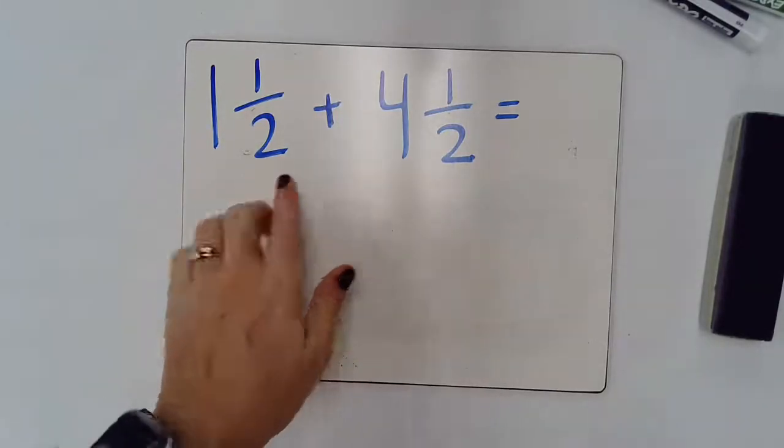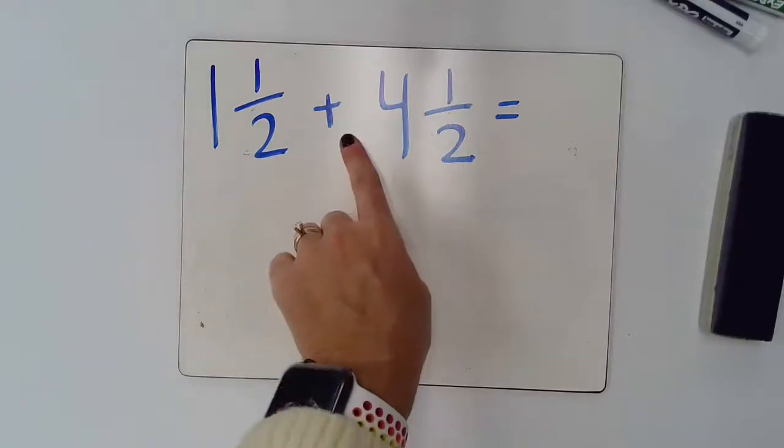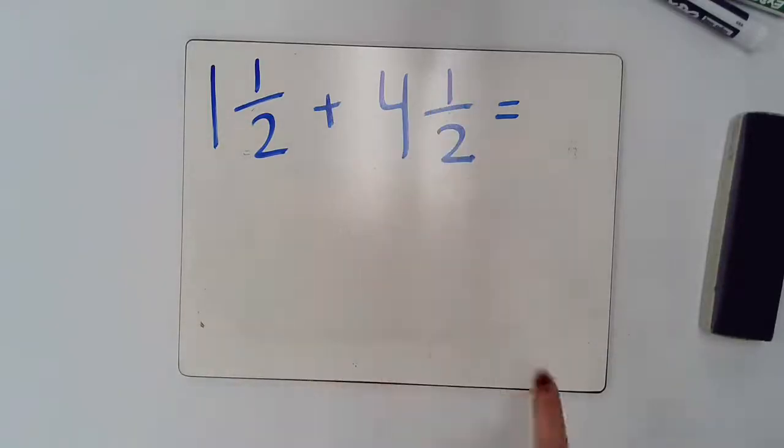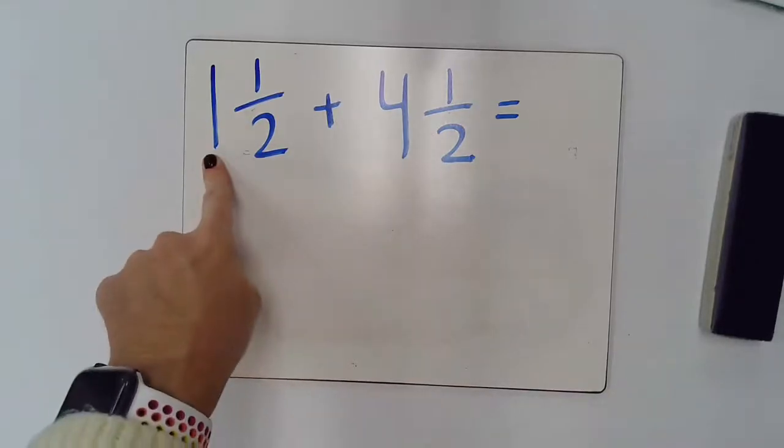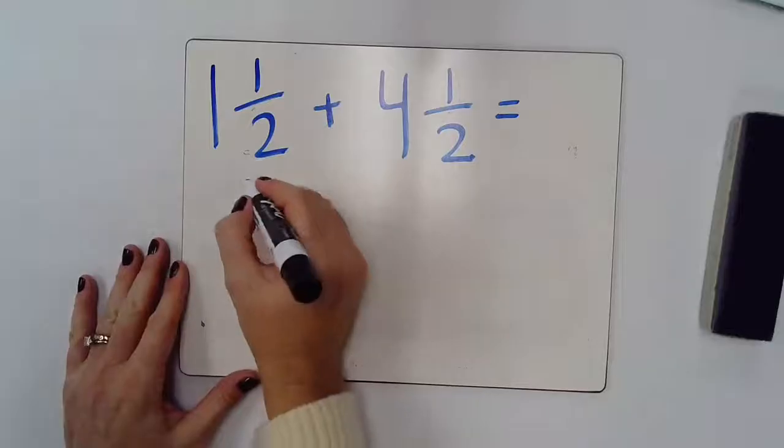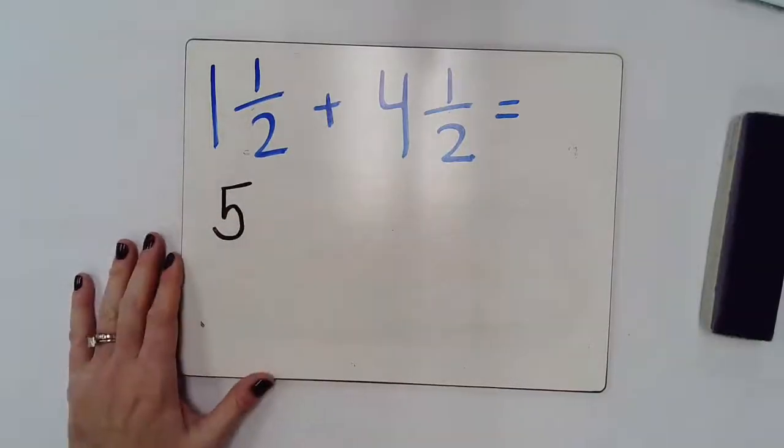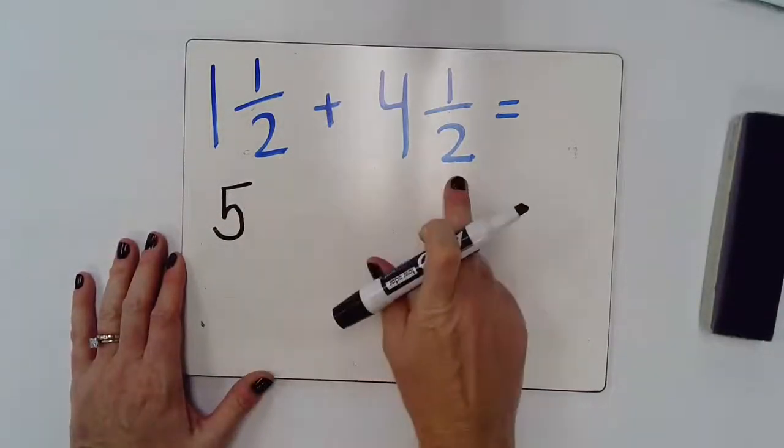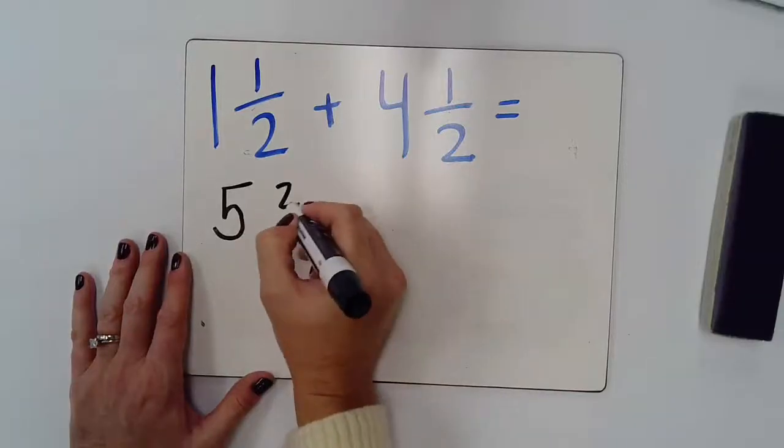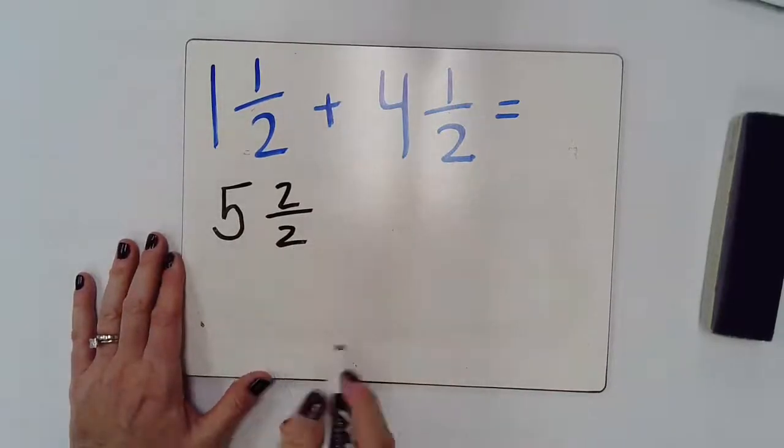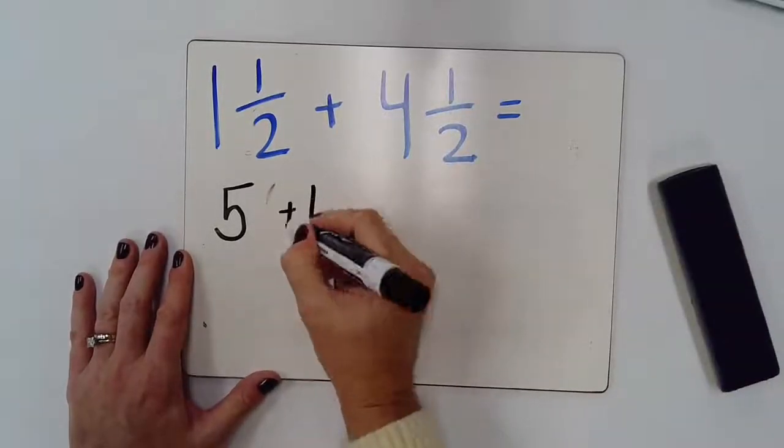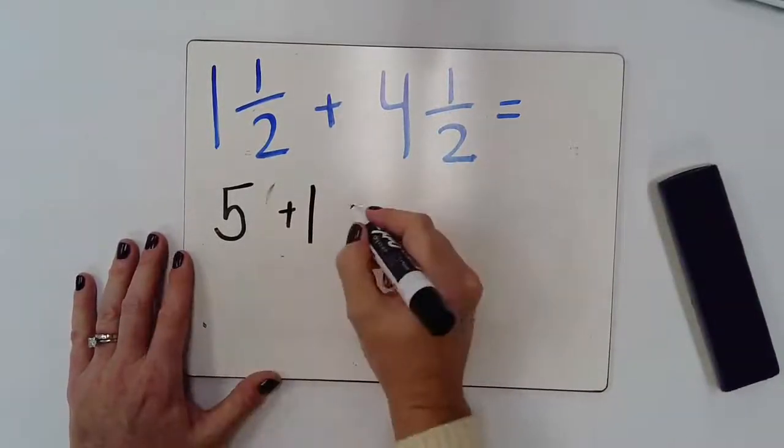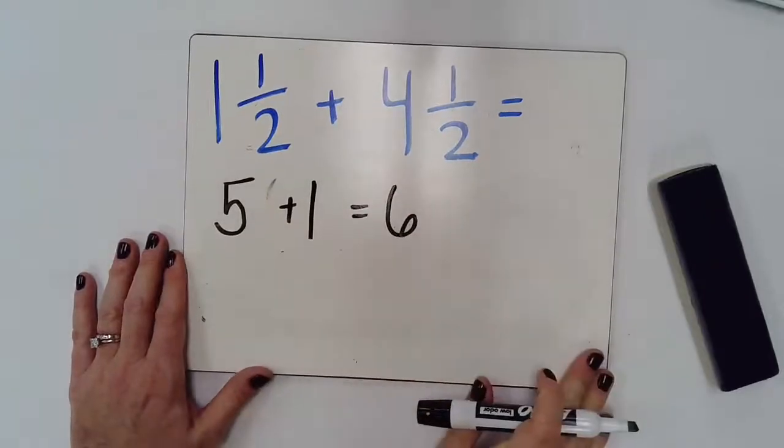So, here's our first problem: 1 and 1 half plus 4 and 1 half. What we're going to do is first add up the whole numbers. So, here I have 1 and 4 together, which gives me 5. And then, I have 1 half and 1 half together, which gives me 2 halves. But I know that 2 halves is also equal to 1, so 5 plus 1 gives me 6.